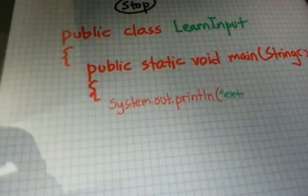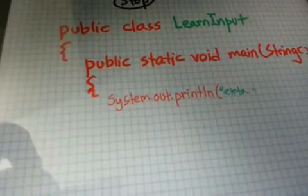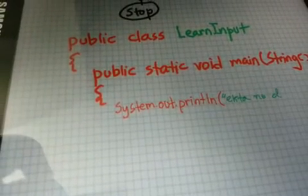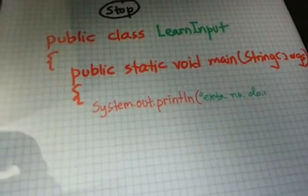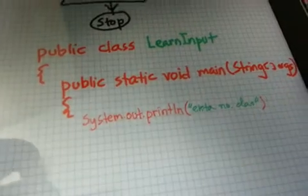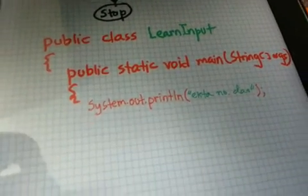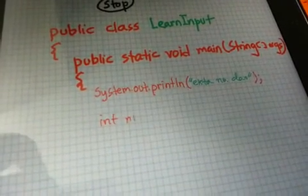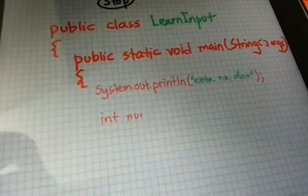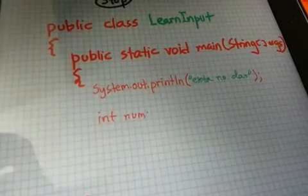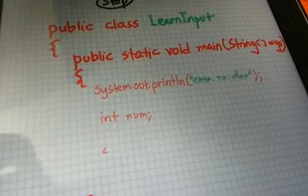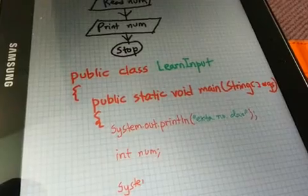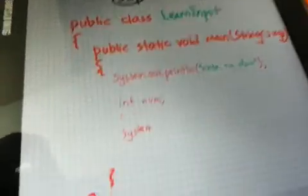In order to print the number that we have taken as input, we need to create a space where we can put it. So we create the variable 'num', which is of type int. Then, to handle the 'print num' portion, we simply write System.out.println followed by the name of the variable.